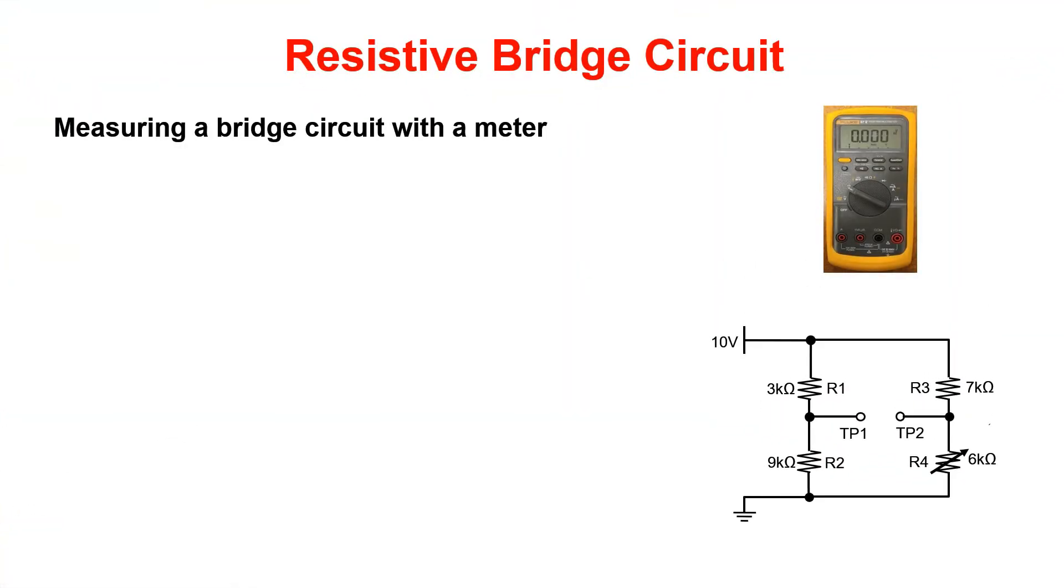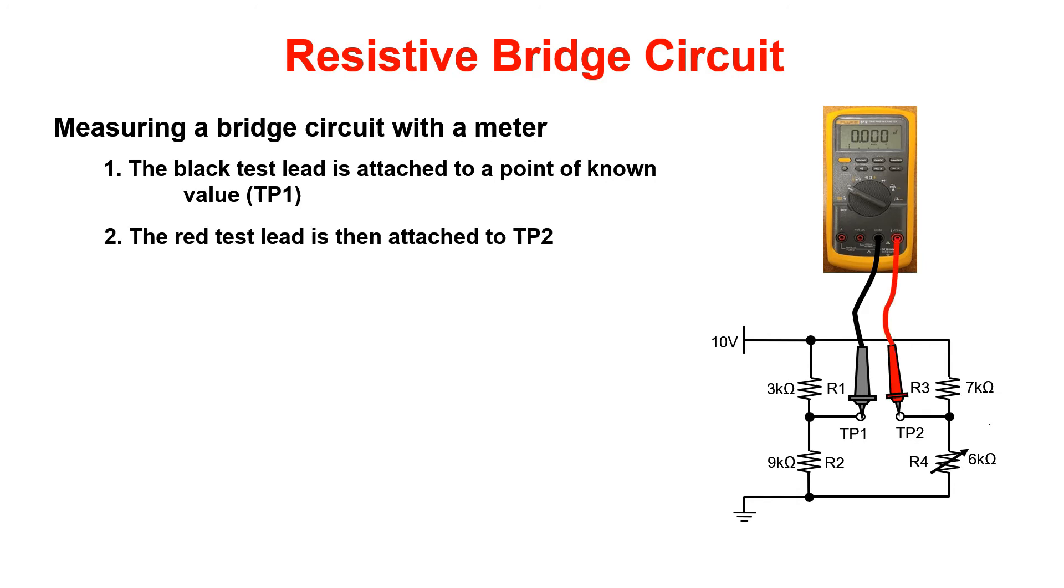To measure the difference between the known and unknown sides of our bridge resistive circuit, the black lead will be attached to a point of known value, test point 1. We can then connect our red test lead to test point 2. Remember that the purpose of a bridge circuit is to compare a known value to an unknown value.